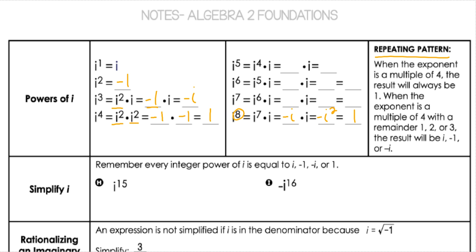Let's look at some more. When we have i to the fifth, i to the fourth is 1, then we have a leftover i, so that would just be i again. When we have i to the sixth, that's i to the fifth times i — we just figured out i to the fifth is i — times i, which is i squared, which is negative 1. i to the seventh is i to the sixth, which is negative 1 times i. That is negative i. So you can see that pattern repeats over and over again.